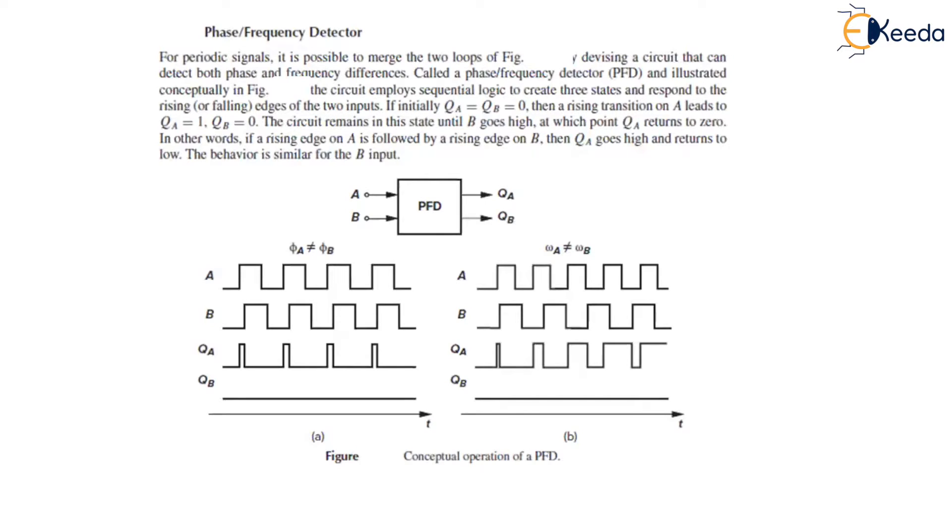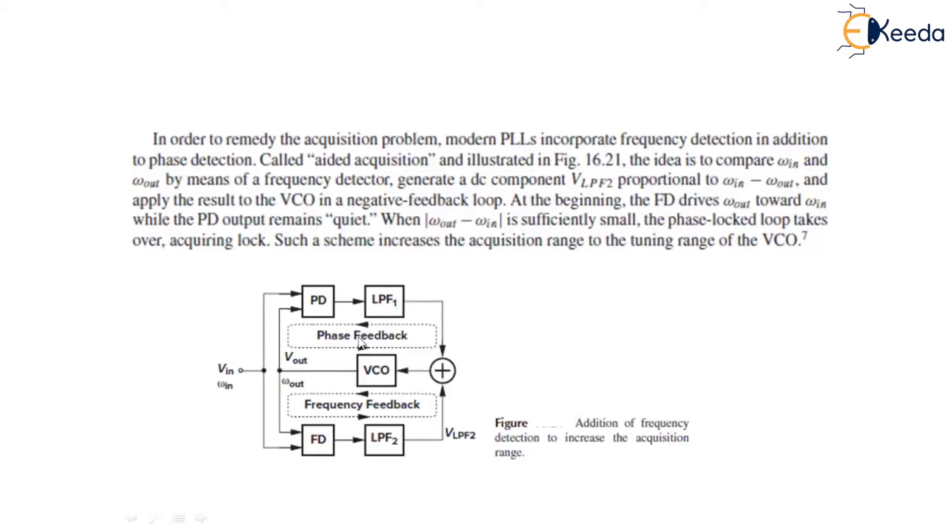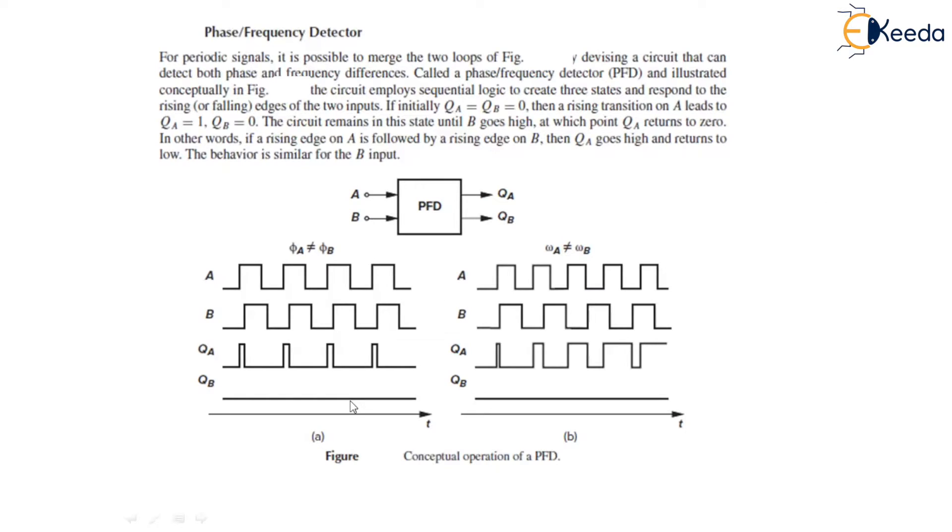Now, let us see phase frequency detector. For a periodic signal, it is possible to merge the two loops, the phase feedback and frequency feedback. We devise a circuit that can detect both phase and frequency difference, which is called a phase frequency detector, PFD. As illustrated conceptually in this figure, the circuit employs sequential logic to create three states and respond to the rising and falling edge of the input. If initially QA and QB equals 0, then a rising transition on A leads to QA equals 1 and QB equals 0.